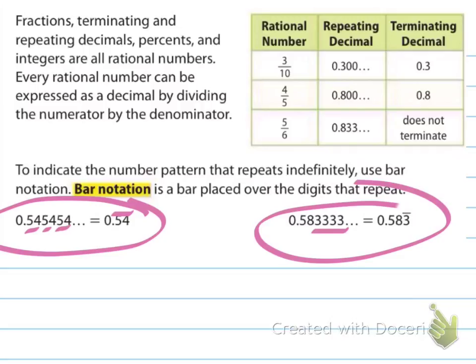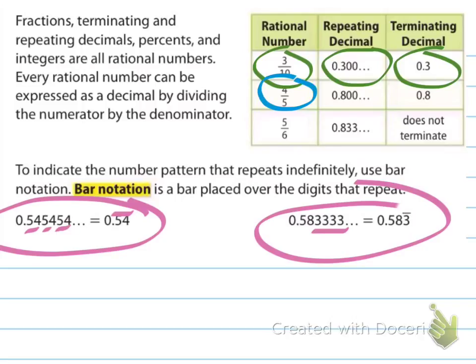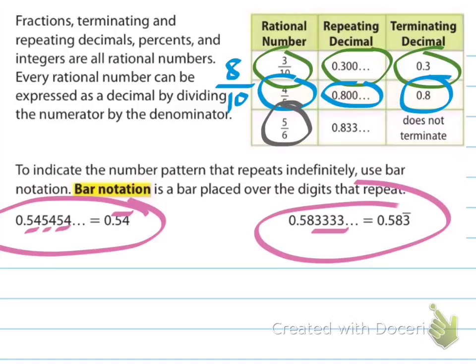Three-tenths can be written as 0.3 where the zeros go on forever, but we'd write it as just 0.3. Four-fifths over a denominator of 10 is eight-tenths, written as 0.8. Five over six — if the denominator is a multiple of three you're going to see a repeating decimal. Five-sixths gives us 0.8333..., where the 3 is repeating. It does not terminate; there's a repeating decimal for that one.